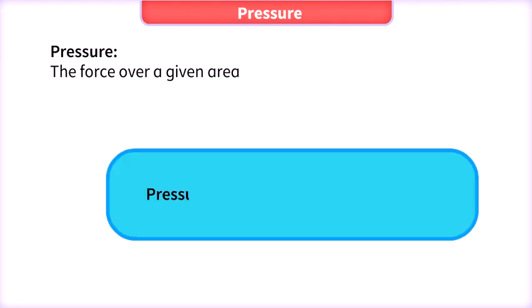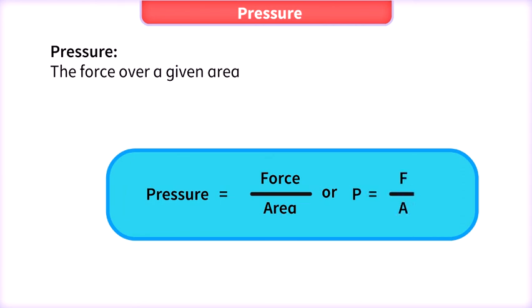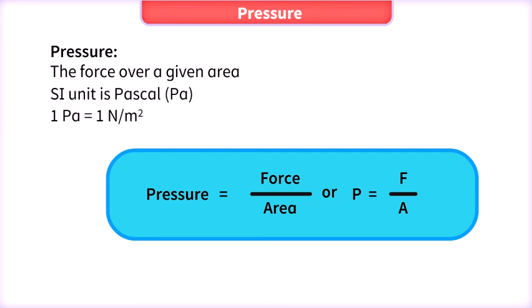Pressure is equal to force divided by area, or P = F / A. That is, 1 pascal equals 1 newton per meter square.